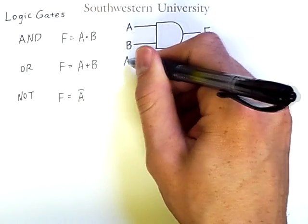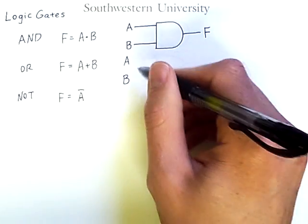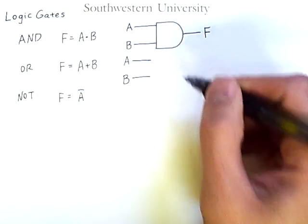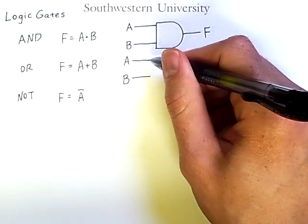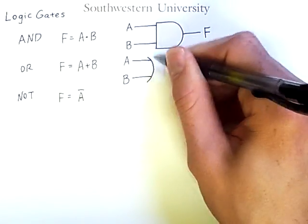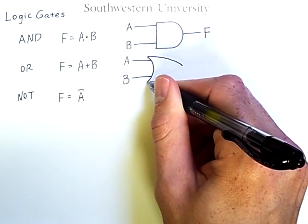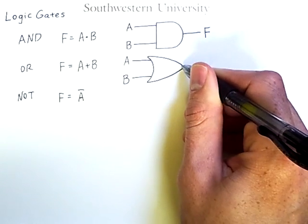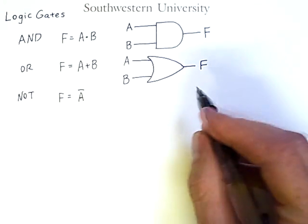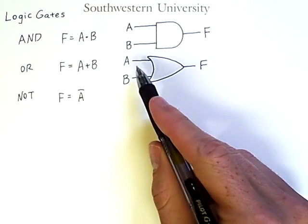An OR gate also has inputs A and B that come in along electrical lines. And the way we draw an OR gate is with a curved edge here that has points, and then these converge at a point here, and the output signal comes out of that point. So this logic gate denotes A or B.